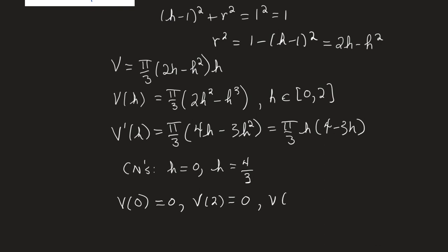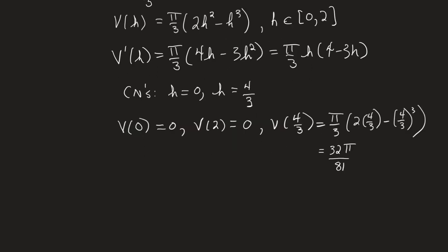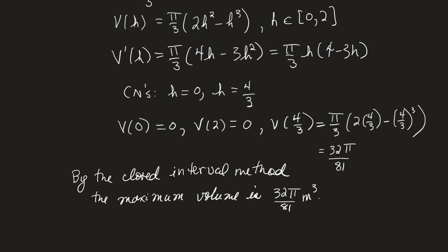Now let's check V(4/3). Well, that's slightly more complicated. But when I evaluate V at 4/3, I get this, which I simplified, which is clearly greater than 0. So I can say by the closed interval method that indeed that gives me the maximum volume. It's attained when h is 4/3 of a meter and the maximum volume is 32π/81 cubic meters.